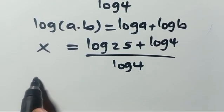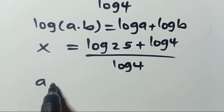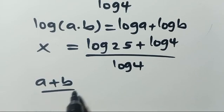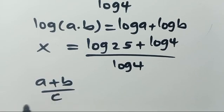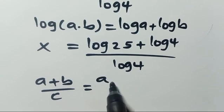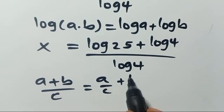Once again, recall that when we have A plus B divided by C, where A and B are constants, this can be simplified as A divided by C plus B divided by C.